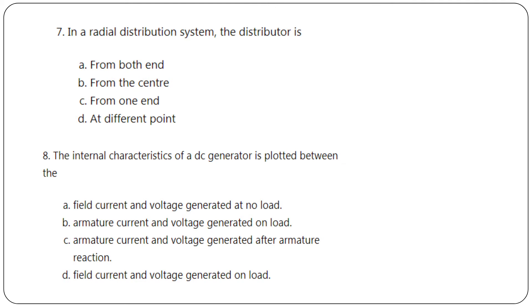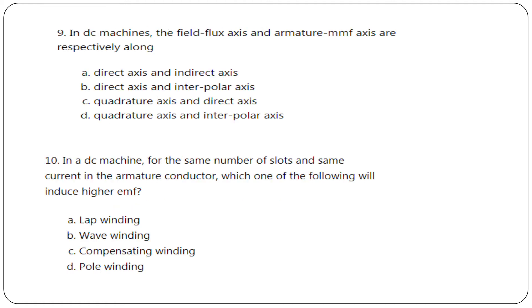The radial distribution system has distributor from both ends, this end, or from one end. It is option C, from one end. The internal characteristics of a DC generator is plotted between armature current versus voltage generated after armature reaction. DC machine field flux axis and armature MMF axis are respectively direct axis and interpolar axis, option B. For DC machine with the same number of slots and same current in armature conductor, wave winding will induce higher EMF, option B.